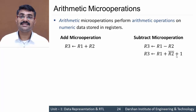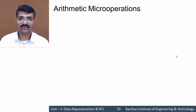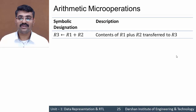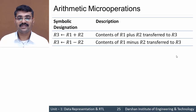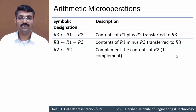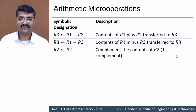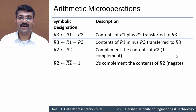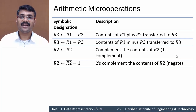We have more arithmetic micro operations — let's list them out. First, already discussed: r3 = r1 + r2. Next, subtraction: r3 = r1 - r2. Then r2 = r2', which means complement the content of r2 — this is the 1's complement of the number. Then r2 = r2' + 1, which is the 2's complement of the number.